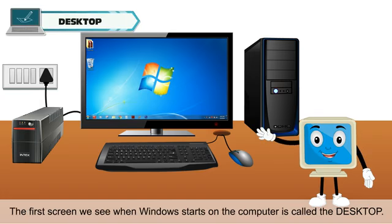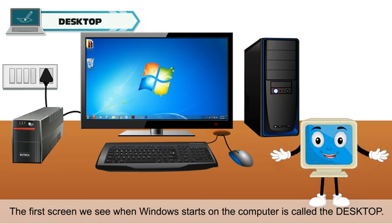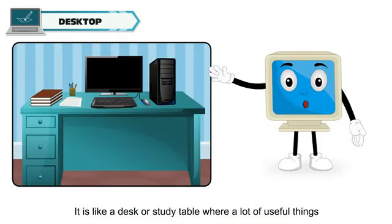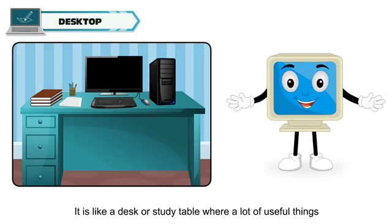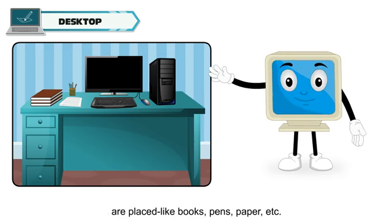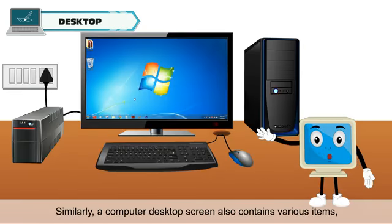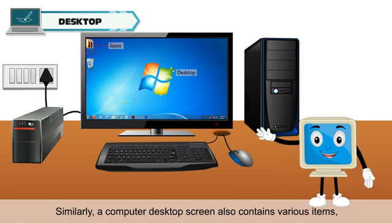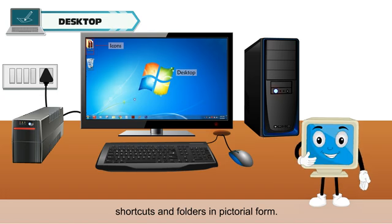The first screen we see when Windows starts on the computer is called the desktop. Do you know why it is called desktop? It is like a desk or study table where a lot of useful things are placed like books, pens, paper, etc. Similarly, a computer desktop screen also contains various items, shortcuts and folders in pictorial form.